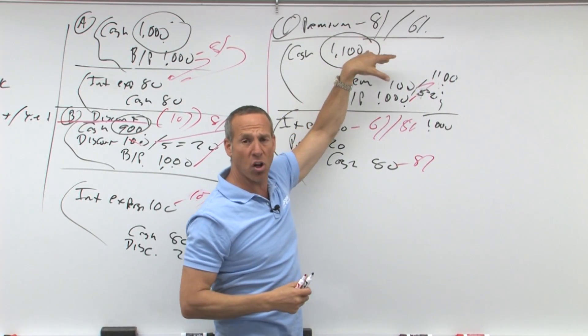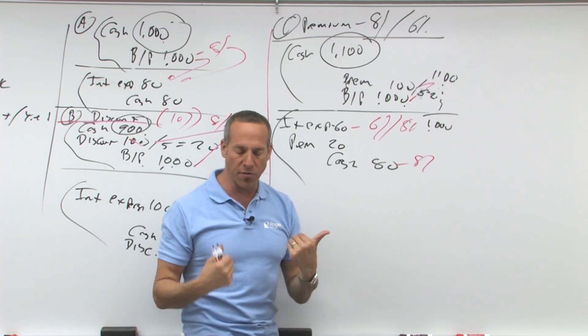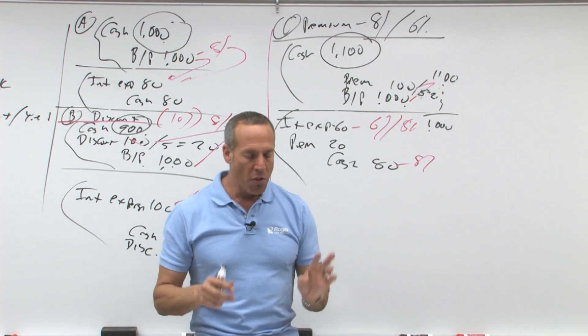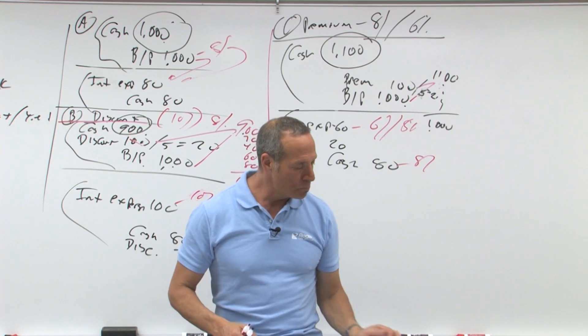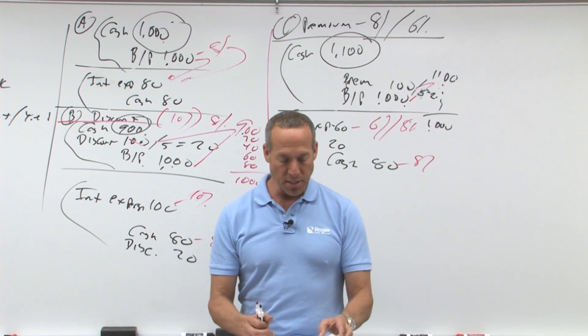There could be other factors that fall into that, but we've got to figure out how much should the present value of the bonds be. When you're present valuing the bonds, there are two things we need to present value. We need to present value the face and we need to present value the interest.